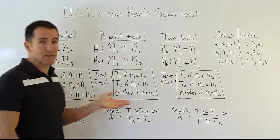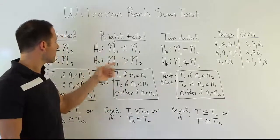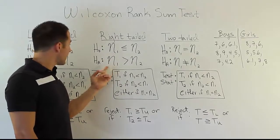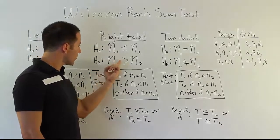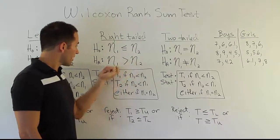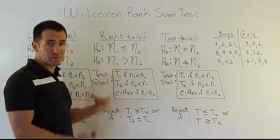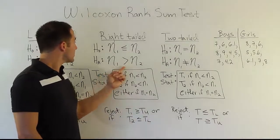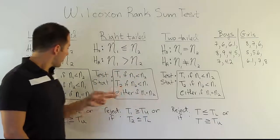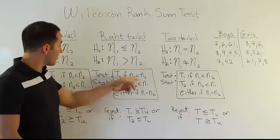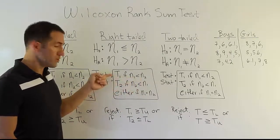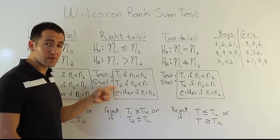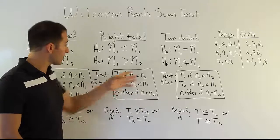Those are the right-tailed scenarios — same kind of thing, comparing medians again. In the right-tailed case, HA says that the boys' median is greater than the girls' median, which would be reflected in the rank totals. The same rule applies for choosing the test stat: if the boys have the smaller sample size, use T1; if the girls have the smaller sample size, use T2; if they're the same, you can use either. All test stat selection decisions are always the same throughout.